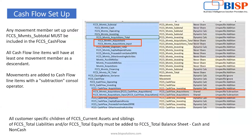For the cash flow setup, any movement member set up under a subtitle must be included in the cash flow. The prefix for that is FCCS underscore — any member with that prefix is a seeded member. All cash flow line items will have at least one movement member as a descendant. Movements are added to cash flow line items for the subtraction consolidation operator.